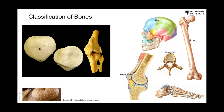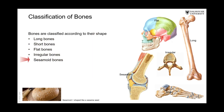There are some other sesamoid bones that are much smaller. We describe a bone as a sesamoid bone when it is present in the tendon of a muscle. For example, the patella is present in the tendon of the quadriceps femoris muscle — the muscle that is present in the front of the thigh.